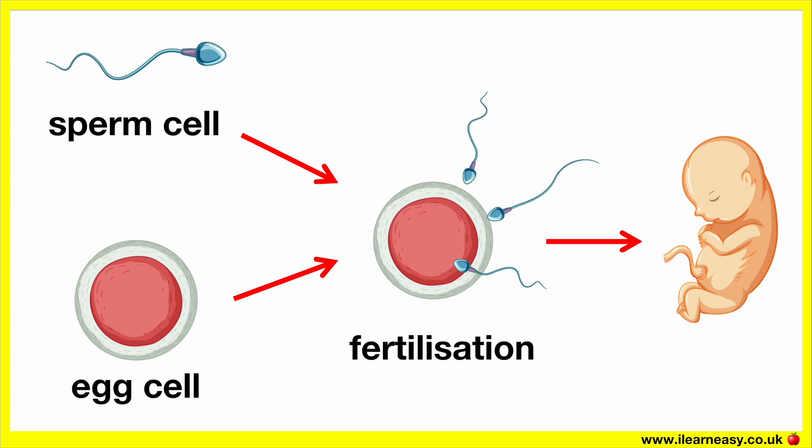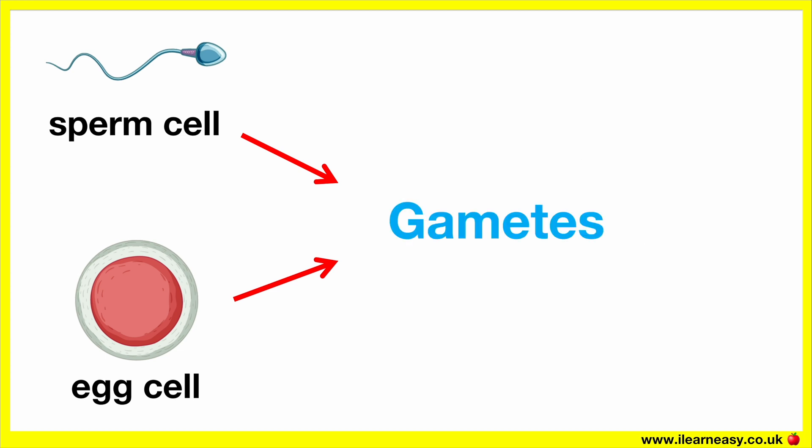Sperm cells and egg cells are known as gametes. Gametes are an organism's reproductive cells. They contain half the genetic information that all our other body cells have. Therefore, they are referred to as haploid.